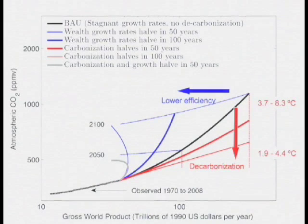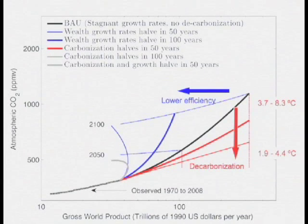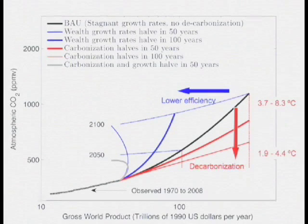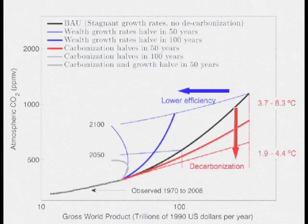Or you could decarbonize — maybe decarbonization might work. So let's say we switch to non-CO2 power supplies and have full decarbonization in just 50 years, which is ridiculously rapid. Well, that would still put us at a very high CO2 concentration with perhaps very high temperature rises. Or maybe some combination of both — wealth growth reduction and decarbonization in 50 years — and that puts us on a curve that would keep us under 500 parts per million by volume. But it would be associated, of course, with a depression. It doesn't look like there are any particularly good ways out.